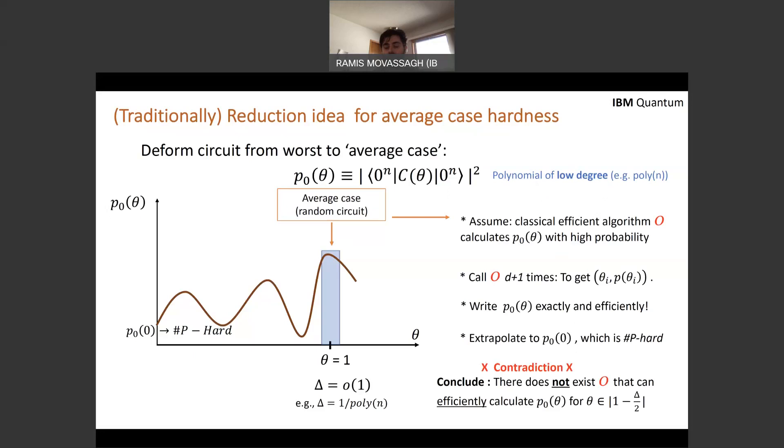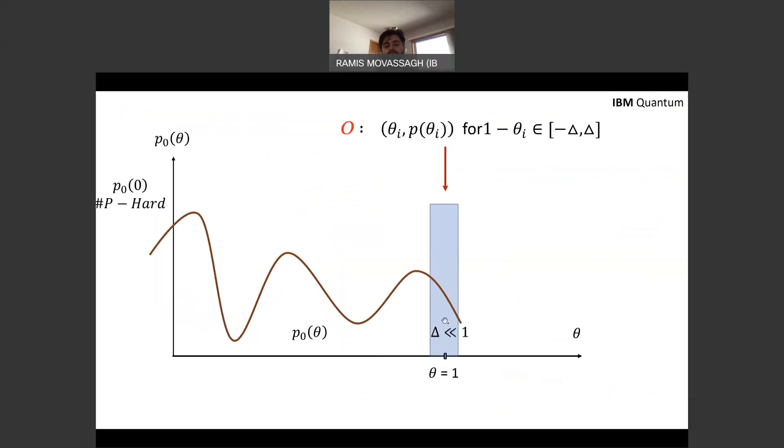And if that is the case and the degree of the polynomial is D, well, if you call the algorithm O D plus one times, you can write down the polynomial exactly and efficiently because the degree was low. Well, if that's the case, then you can extrapolate to P_0 at the point zero, which is a Sharp-P hard quantity, and solve a Sharp-P hard problem. So all these steps were efficient, poly-N, and we just solved something that was in Sharp-P, that was Sharp-P hard.